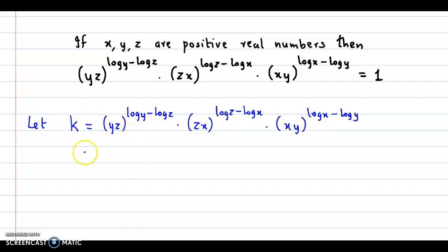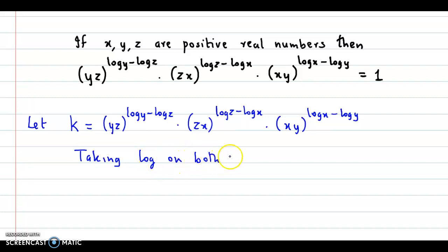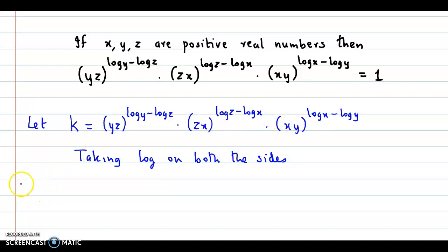So we take log on both sides. We apply the log to the powers, and the product is converted to addition. So on the left hand side we get log k.